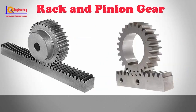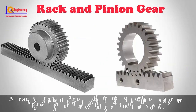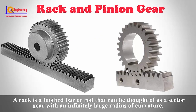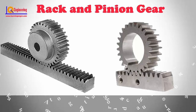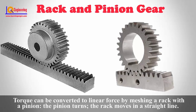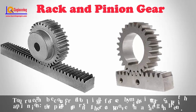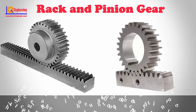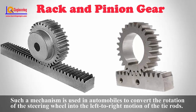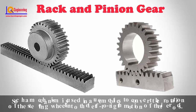Rack and Pinion Gear: A rack is a toothed bar or rod that can be thought of as a sector gear with an infinitely large radius of curvature. Torque can be converted to linear force by meshing a rack with a pinion. The pinion turns and the rack moves in a straight line. Such a mechanism is used in automobiles to convert the rotation of the steering wheel into the left-to-right motion of the tie rods.